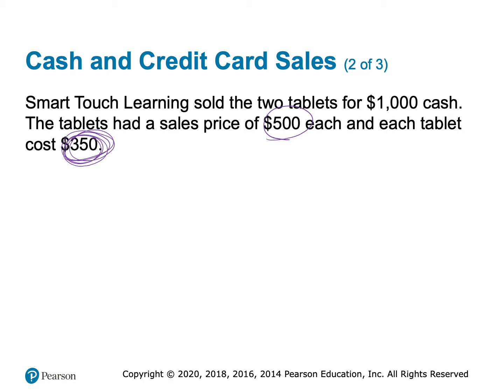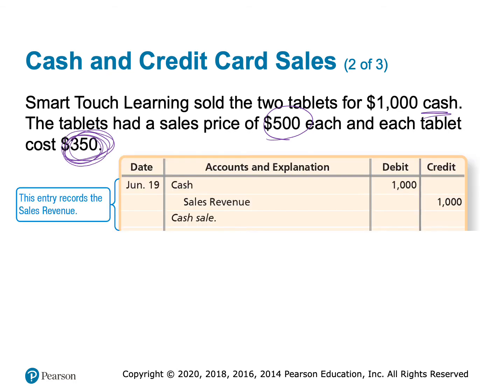The first entry is to record the sale — we actually learned this journal entry back in Chapter 2. Any time we sell something, we want to credit that revenue account. Revenues are always, always, always credited. So in this case, we'll credit sales revenue. Any time we credit a revenue, we really only have two options for the debit: it's either cash or accounts receivable. Since the customer paid cash, we'll debit cash and credit sales revenue for the $1,000 selling price.